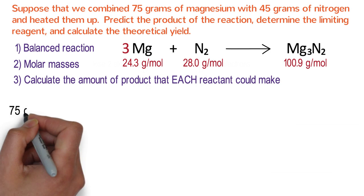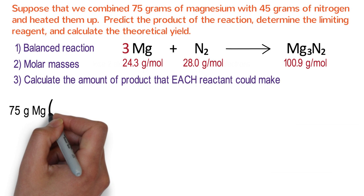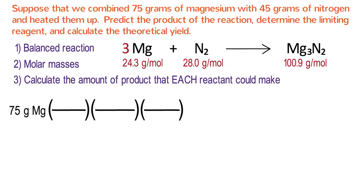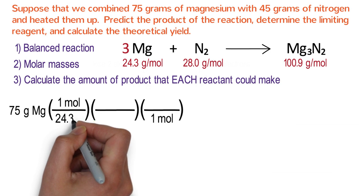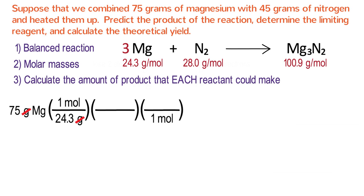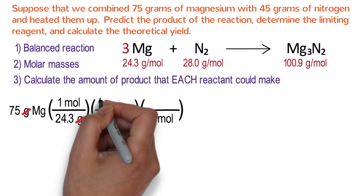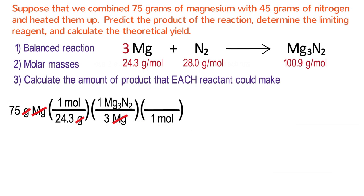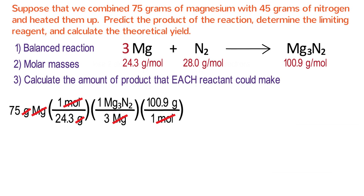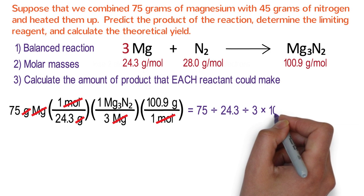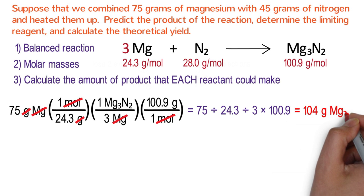Starting with magnesium: we have 75 grams of magnesium and want to find how much Mg₃N₂ we can make. Multiply by three conversion factor fractions. Place one mole on the top left and bottom right. On the bottom left put 24.3 grams of Mg; grams cancel. In the middle fraction use the balanced equation coefficients: 3 Mg on the bottom and 1 Mg₃N₂ on the top; moles of Mg cancel. On the top right put 100.9 grams of Mg₃N₂; moles cancel. Calculating: 75 ÷ 24.3 ÷ 3 × 100.9 = 104 grams of magnesium nitride.